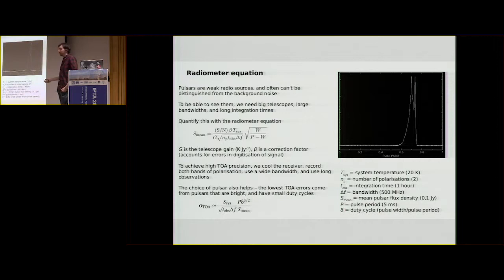And then this term here is the duty cycle of the pulsar. So it's just square root of the pulse width divided by the pulse period minus the width. So this is just kind of a ratio of the amount of time that the pulse is actually on compared to when it's off. And we can tie this, we can actually just tie this straight into the TOA precision that we are able to achieve for a given observation.